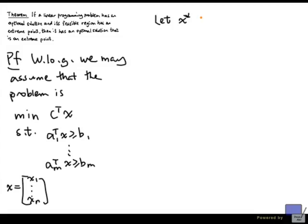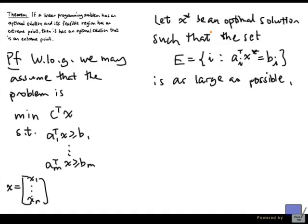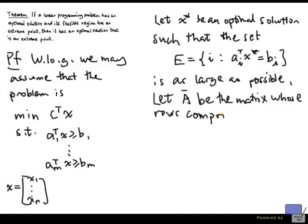Now let's take an optimal solution that satisfies a special property. So we are picking an optimal solution x-star such that the set of indices i where a_i transpose x-star equals b_i is as large as possible. In other words, x-star is an optimal solution that satisfies as many constraints with equality as possible. Let A-bar be the matrix whose rows comprise of a_i transpose where i is indexed by the elements in E.